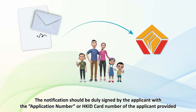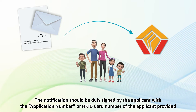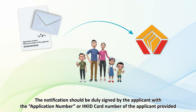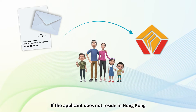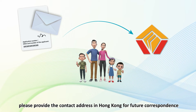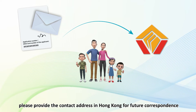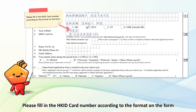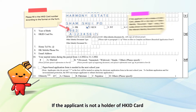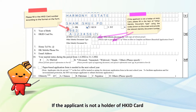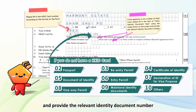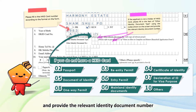The notification should be duly signed by the applicant with the application number, or Hong Kong ID card number, of the applicant provided. If the applicant does not reside in Hong Kong, please provide the contact address in Hong Kong for future correspondence. Please fill in the Hong Kong ID card number according to the format on the form. If the applicant is not a holder of a Hong Kong ID card, please fill in the item of Other Identity Document Type using the codes shown on the screen, and provide the relevant identity document number.